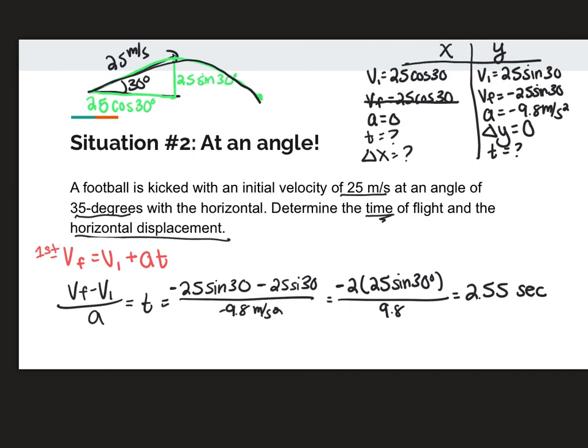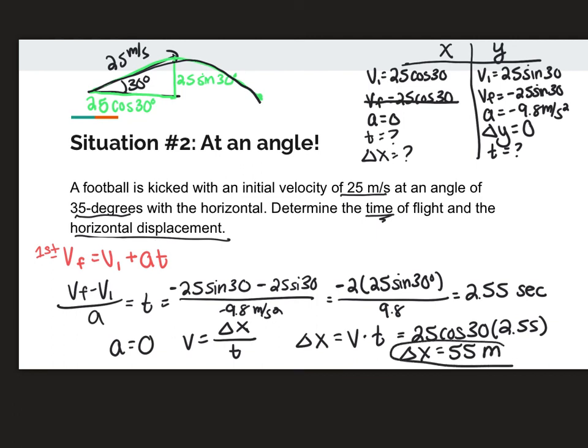Remember, in my X direction, I have no acceleration. So that means the only equation I can use is my velocity equation. Now, this is technically our second equation on our equation sheet, but I'll just like to say memorize it like this. So now I'm solving for delta X. I'm going to rearrange for that. So I have my initial velocity. Remember, that's 25 cosine 30. It's not 25. I will tell you that is the number one mistake that I see students make in here. We've got to make sure we break up that variable. So I'm going to get my answer for my delta X is 55 meters, approximately half a football field.